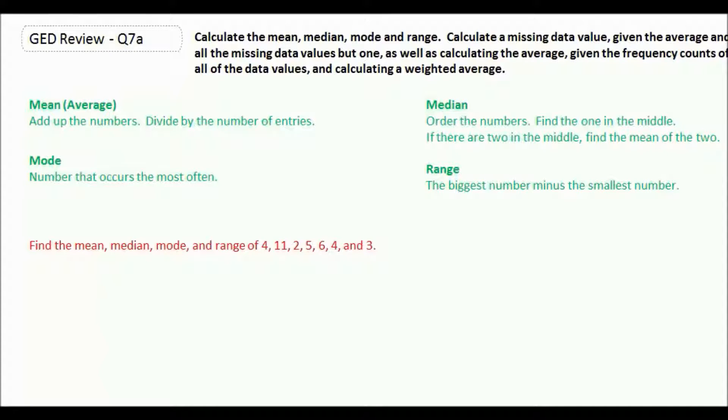Now if there's two numbers in the middle, you're just going to find the mean of the two of them. So you add those two numbers up and divide it by two, and that's your median.